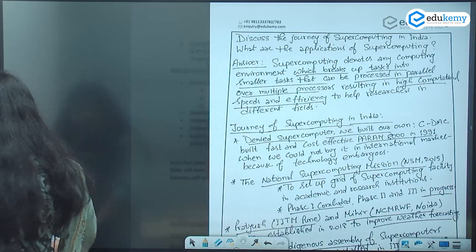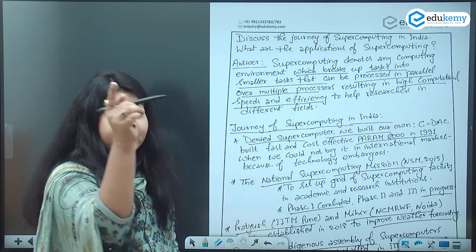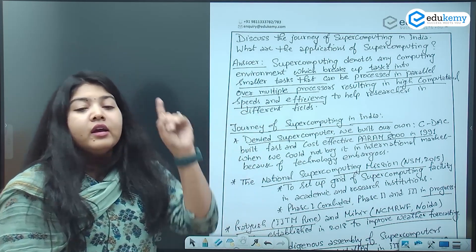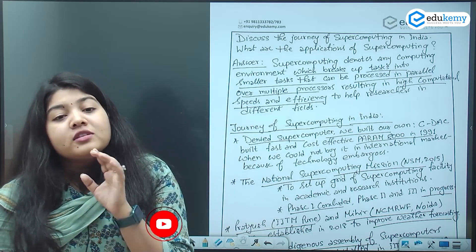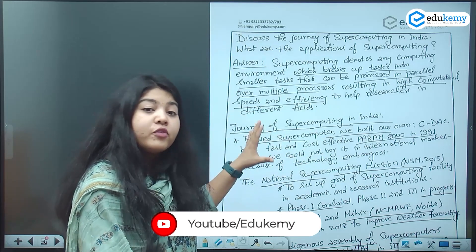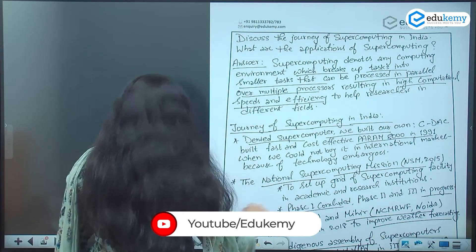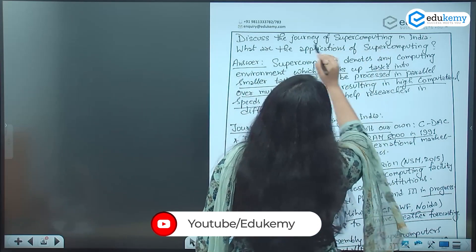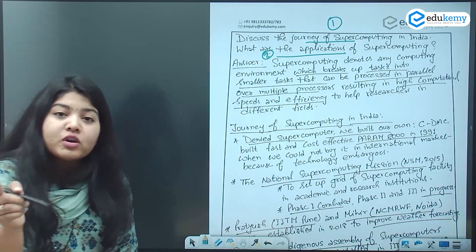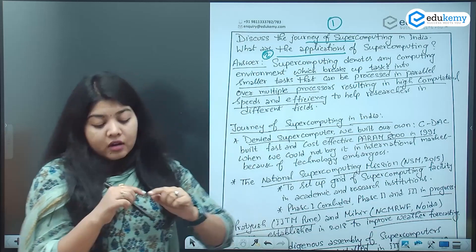Now let us jump to our model answer. In the model answer, one thing which was missing in the previous answer — that was a draft answer written by students, which we rectify and make into a better answer by telling them where they went wrong. In the draft, the problem was that this question demands you talk about the journey first and then the application, whereas the student talked about the application first and then the journey — which is the opposite.